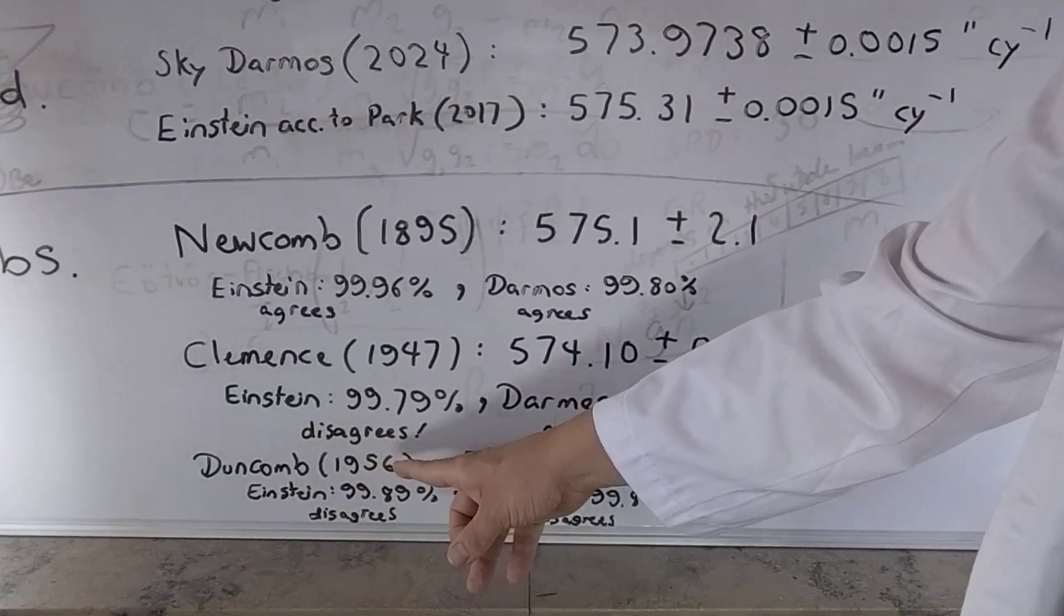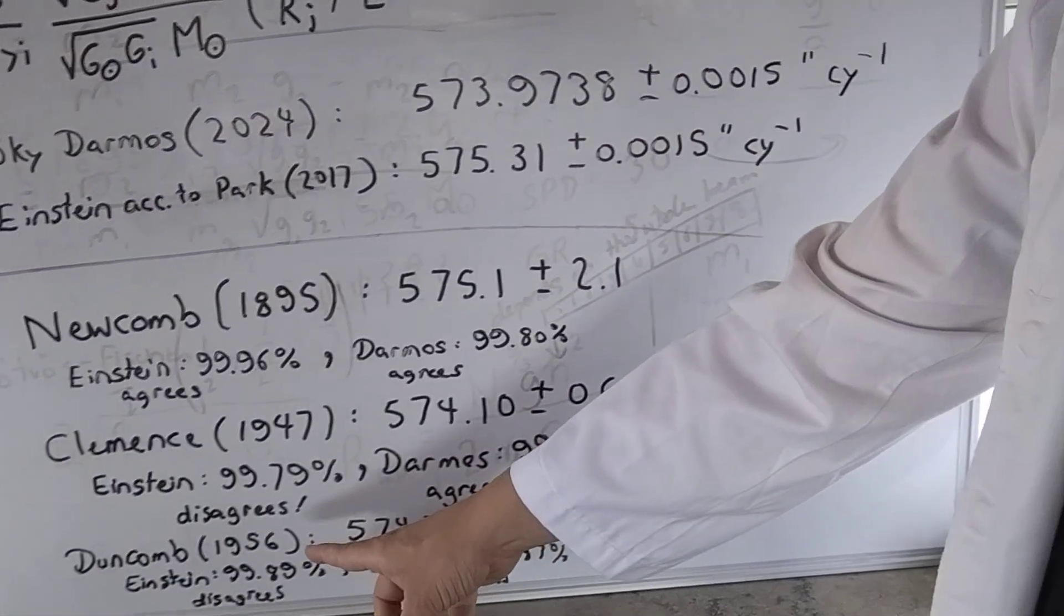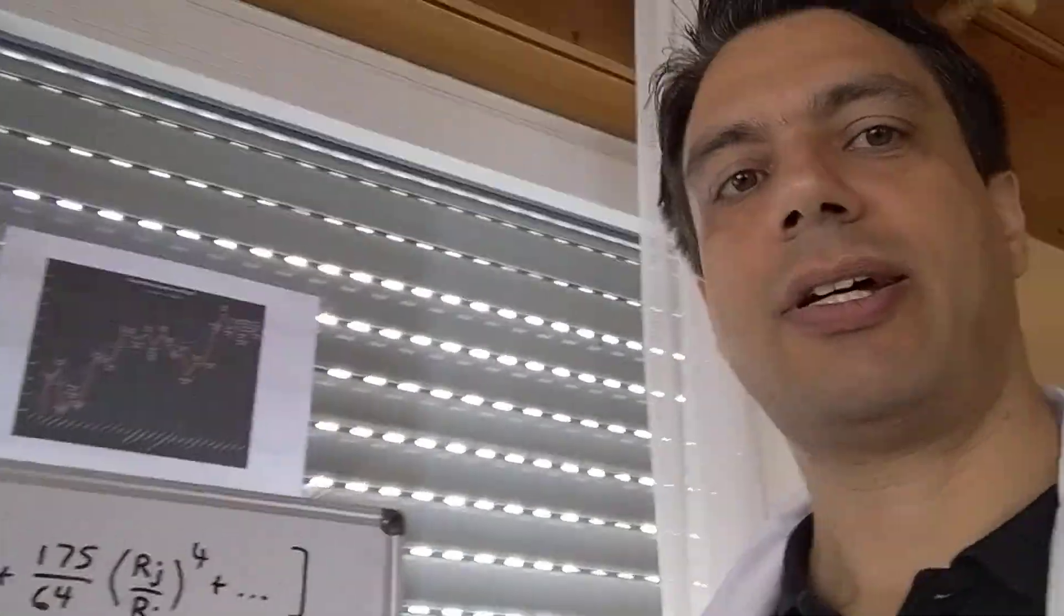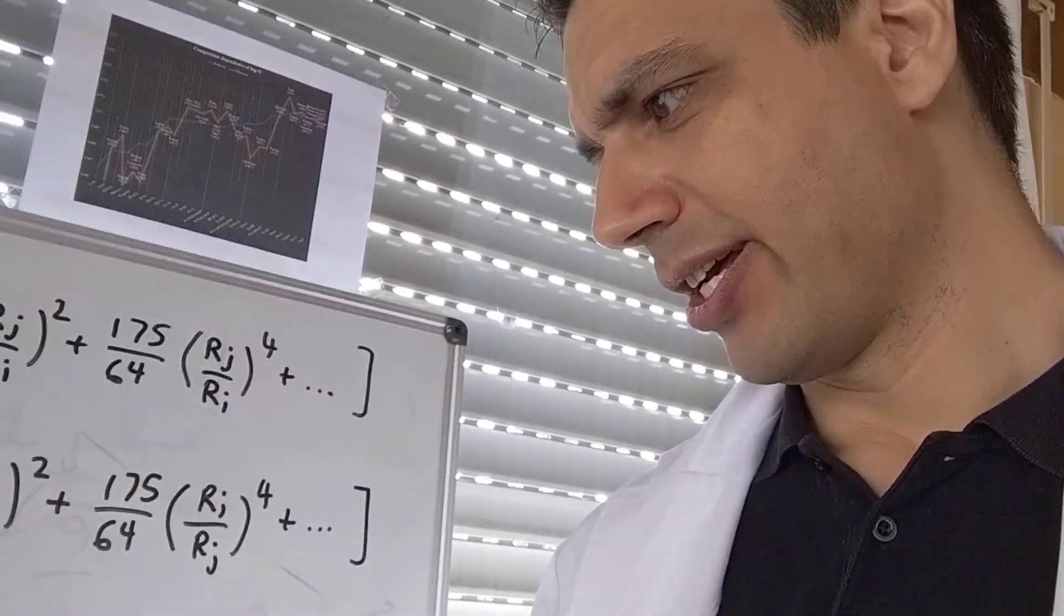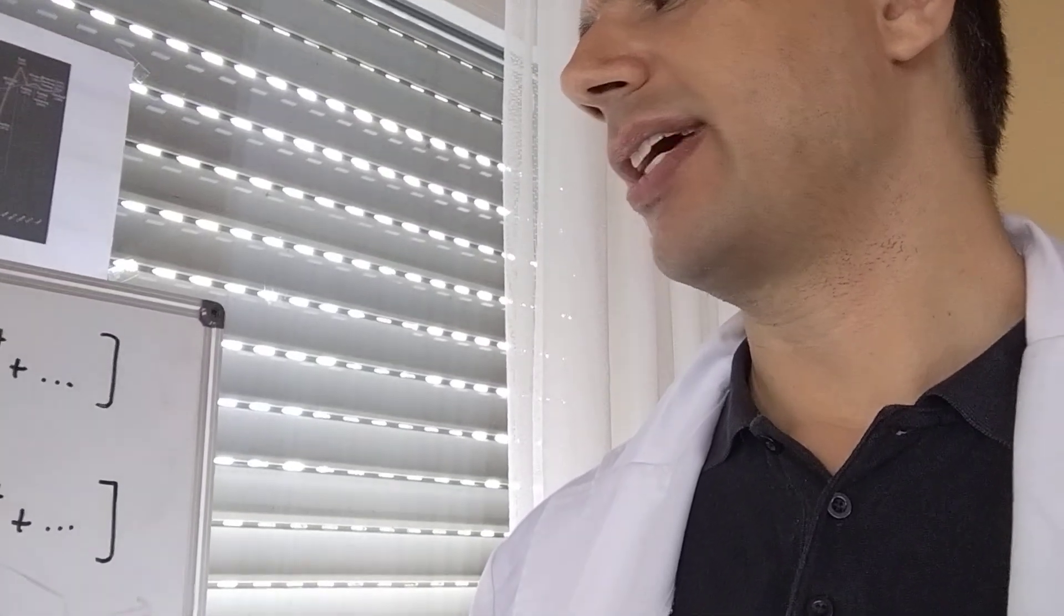Then you have Duncombe, 1956. And here, both disagree. But that's a very short paper. I don't know what to think about it. But what did happen with Newcomb is that for the first time you had agreement with General Relativity and the other planets, Venus, Earth, and Mars.